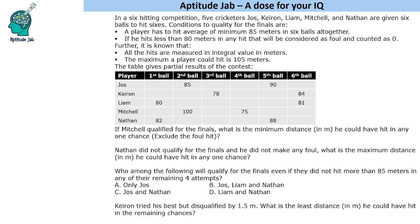Welcome to Aptitude Lab. This is a set based on games and tournaments. There is a six-hitting competition with five cricketers, each given six balls to hit sixes and qualify for the final. Conditions: a player must average a minimum of 85 meters across six balls. Any hit less than 80 meters is a foul and counted as zero. All hits are measured in integral values in meters, and the maximum a player can hit is 105 meters.